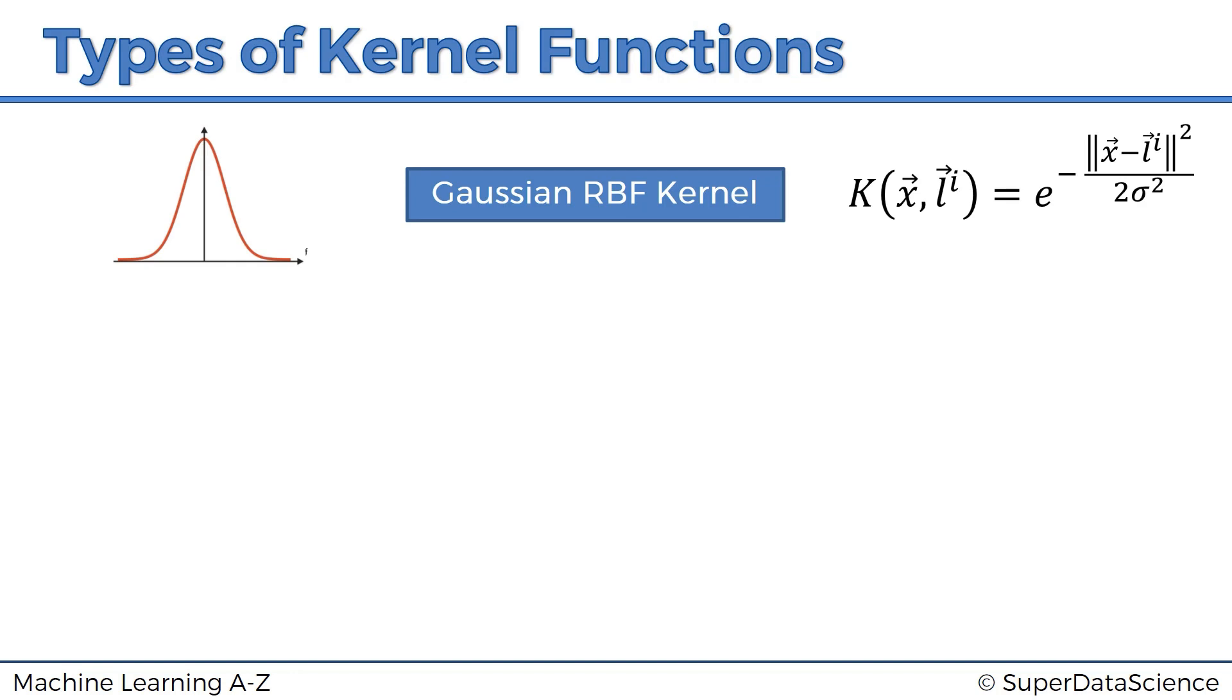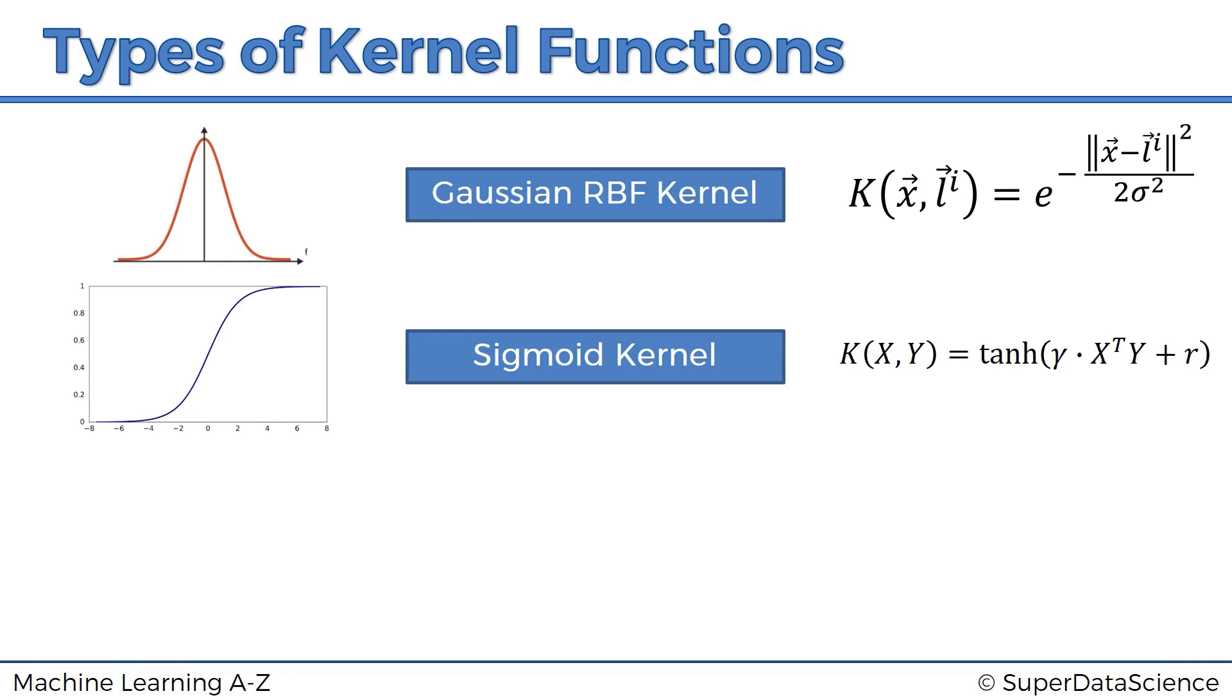Here we have the Gaussian or RBF kernel which we've already discussed. There's also a popular choice, the sigmoid kernel, with its formula shown on the right.